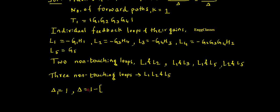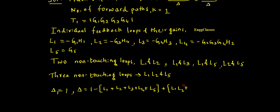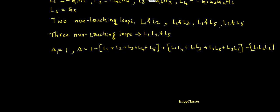Now I need to find Δ. Delta is equal to 1 minus the sum of all individual feedback loops: (L1 + L2 + L3 + L4 + L5), plus the sum of products of two non-touching loops: (L1·L2 + L1·L3 + L1·L5 + L2·L5), minus the product of three non-touching loops: L1·L2·L5.